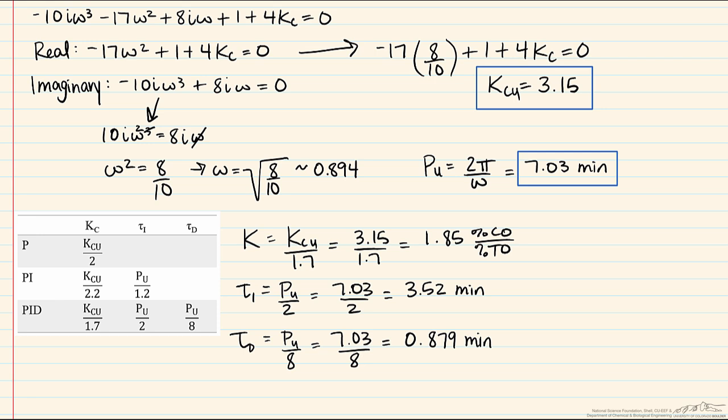So in this screencast we showed how we can use transfer functions to use the Ziegler-Nichols method in order to determine a good start for tuning parameters to control your process.